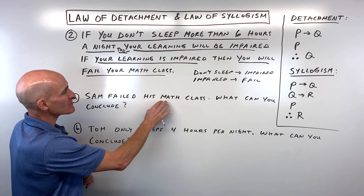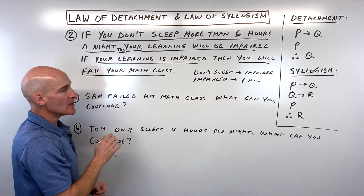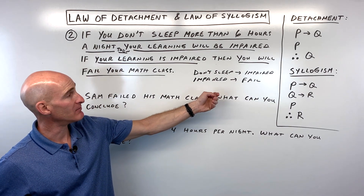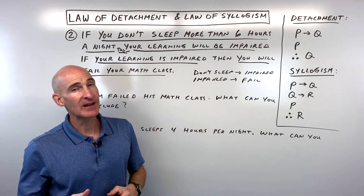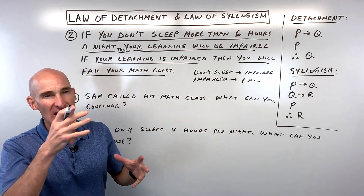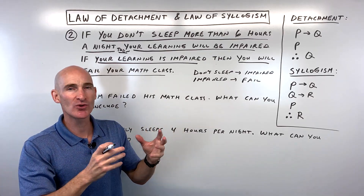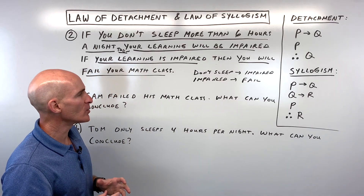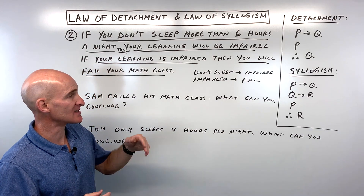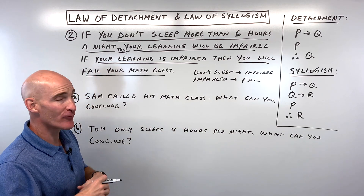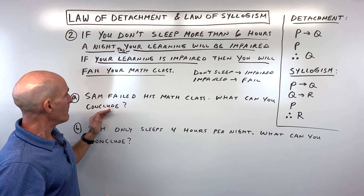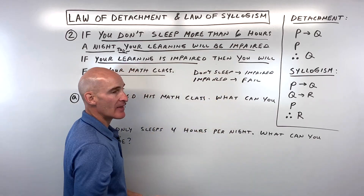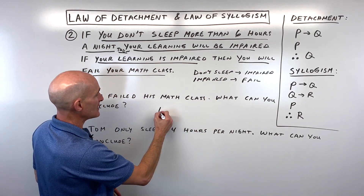Let's look at letter A: Sam failed his math class — what can you conclude? Would you say that he didn't sleep? A lot of times people make associations and say one causes the other with no sense of order or cause and effect using the laws of logic. But what's actually happening here is that they're saying it backwards, and that's what we call an invalid argument. Sam could have failed his math class because he didn't show up for the final, didn't study, was caught cheating on his test, or any number of other possibilities.